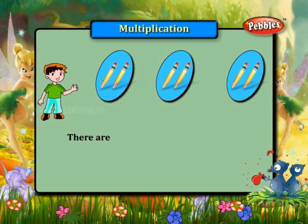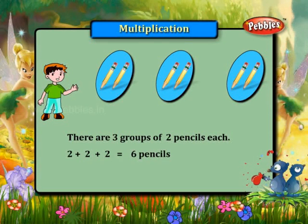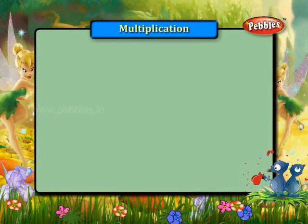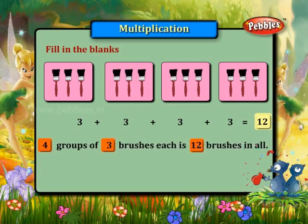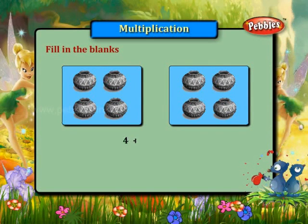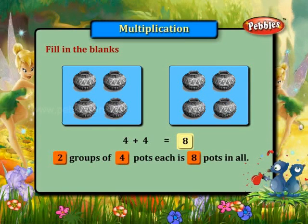There are three groups of two pencils each. Two plus two plus two is equal to six. Fill in the blanks: three plus three plus three plus three is equal to twelve. Four groups of three brushes each is twelve brushes in all. Four plus four is equal to eight. Two groups of four pots each is eight pots in all.